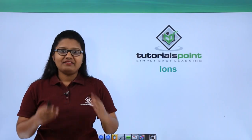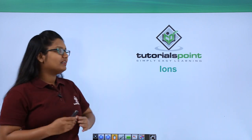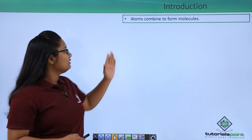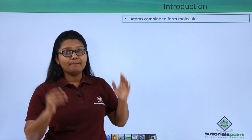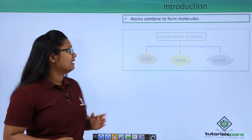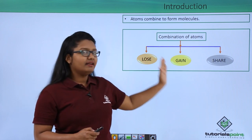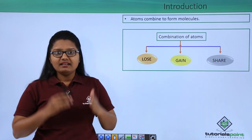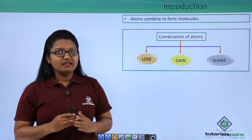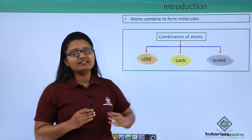Welcome to Tutorials Point. In this video we will be learning about ions. It is known that atoms combine to form molecules and they do it in three different ways: they either lose, gain, or share electrons. The compounds composed of molecules made up of atoms which lose or gain electrons are termed as ionic compounds.